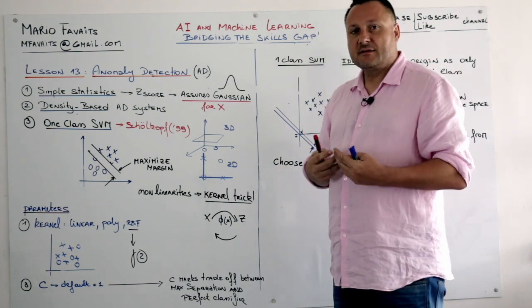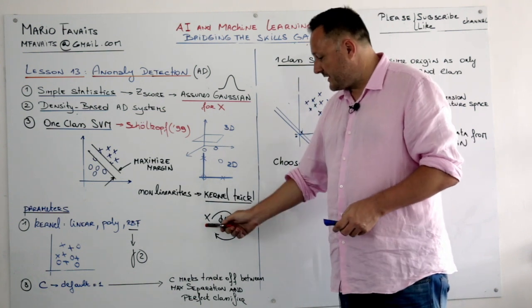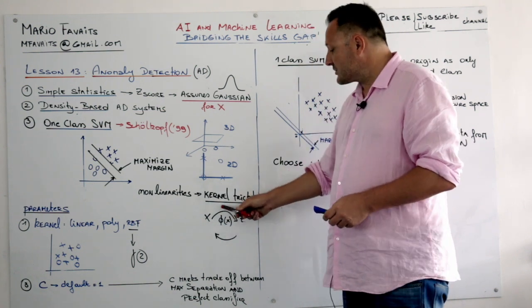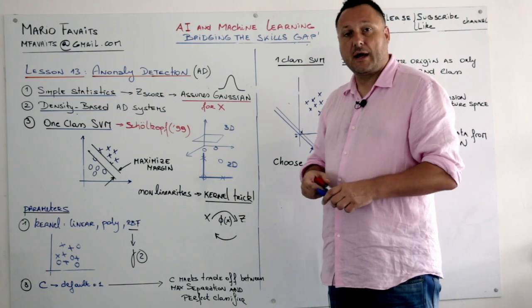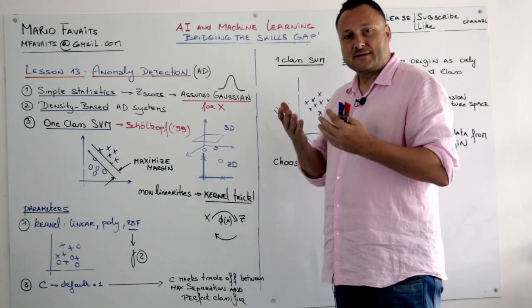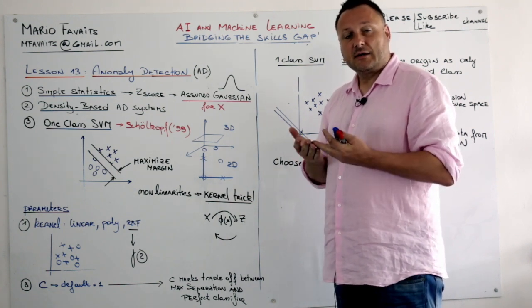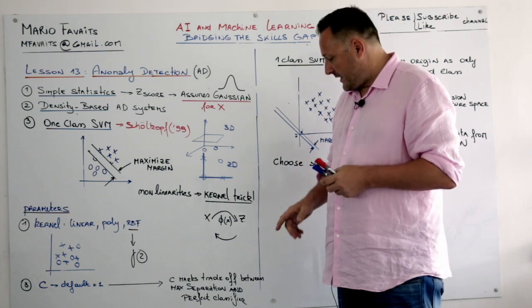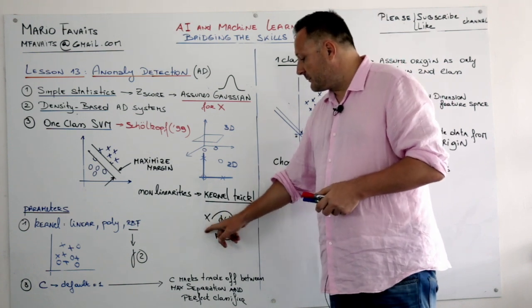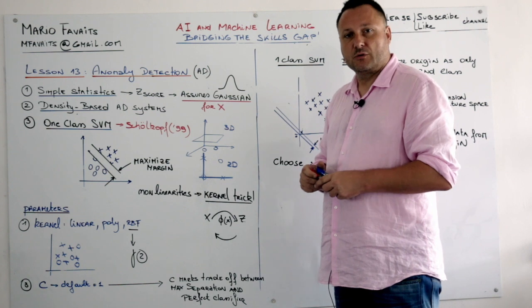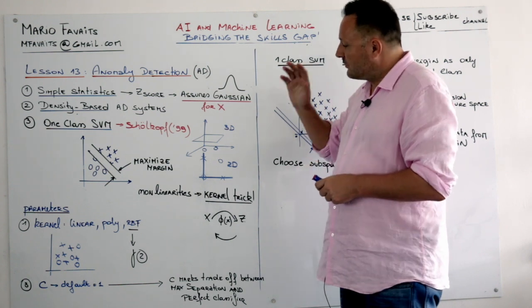If the data is not separable in the lower dimension space here x, we would actually transform that data to a higher dimensional space. Separate the data there and calculate the support vectors. And then at the end you would bring back the data to the original space.